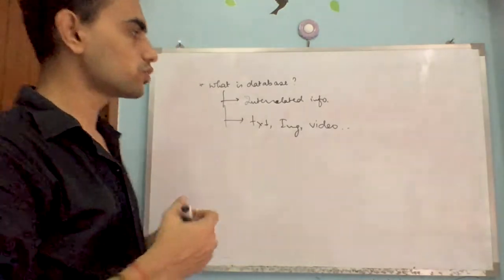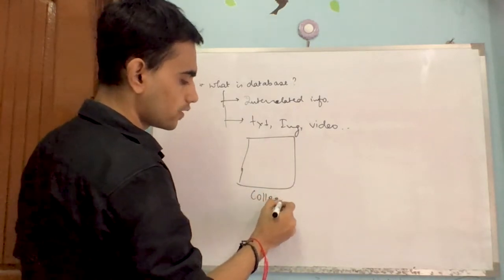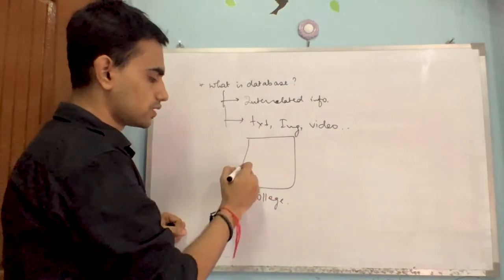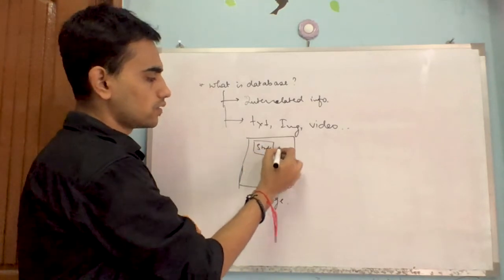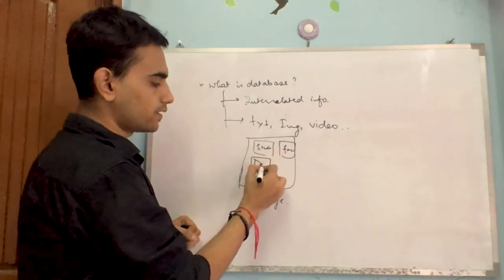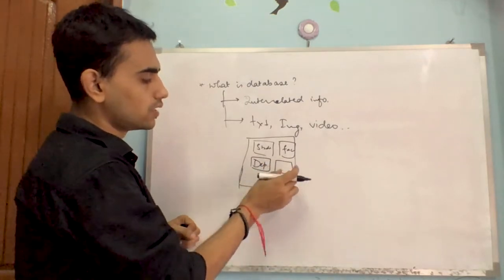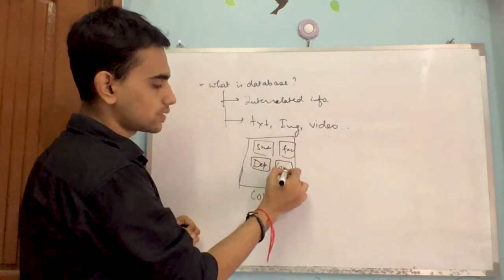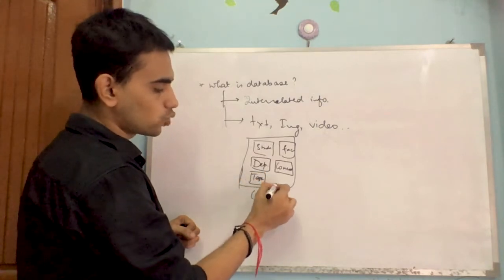To give an example, let's take a college — the college will have a database. It will have data of students, data of faculty, data of departments. When I say database, that means a table: a table of departments, a table of students, of faculty, of courses.